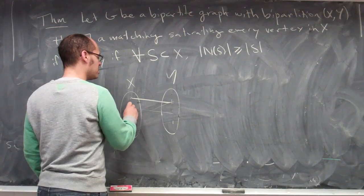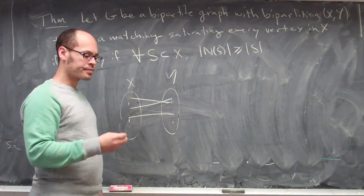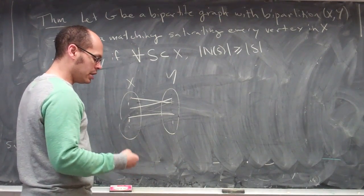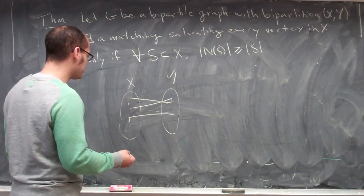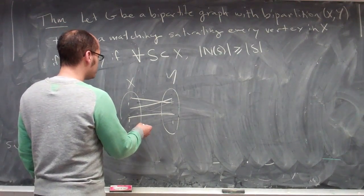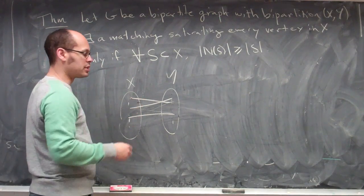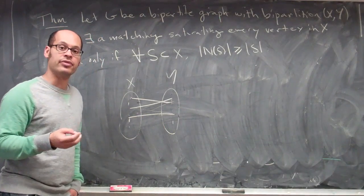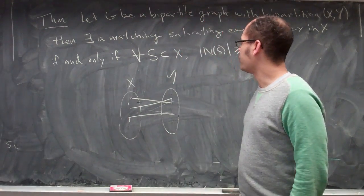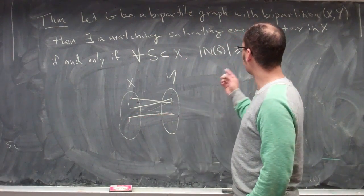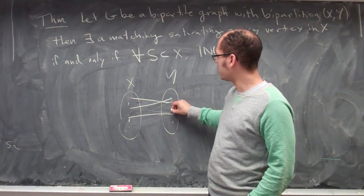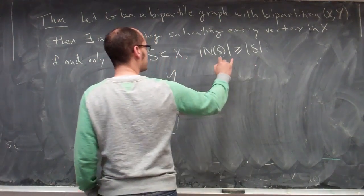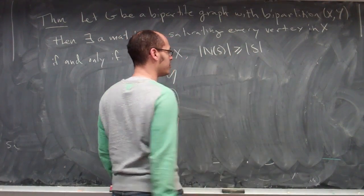That is, we'd like to find a collection of edges which don't bump into each other — disjoint, non-incident edges — such that for every vertex in x, there's an edge that hits it in our set. The statement was that there exists such a matching which saturates every vertex in x if and only if, for every subset of x, the neighborhood of that subset — the vertices on the other side connected to it by some edge — has size at least as large as the subset itself.